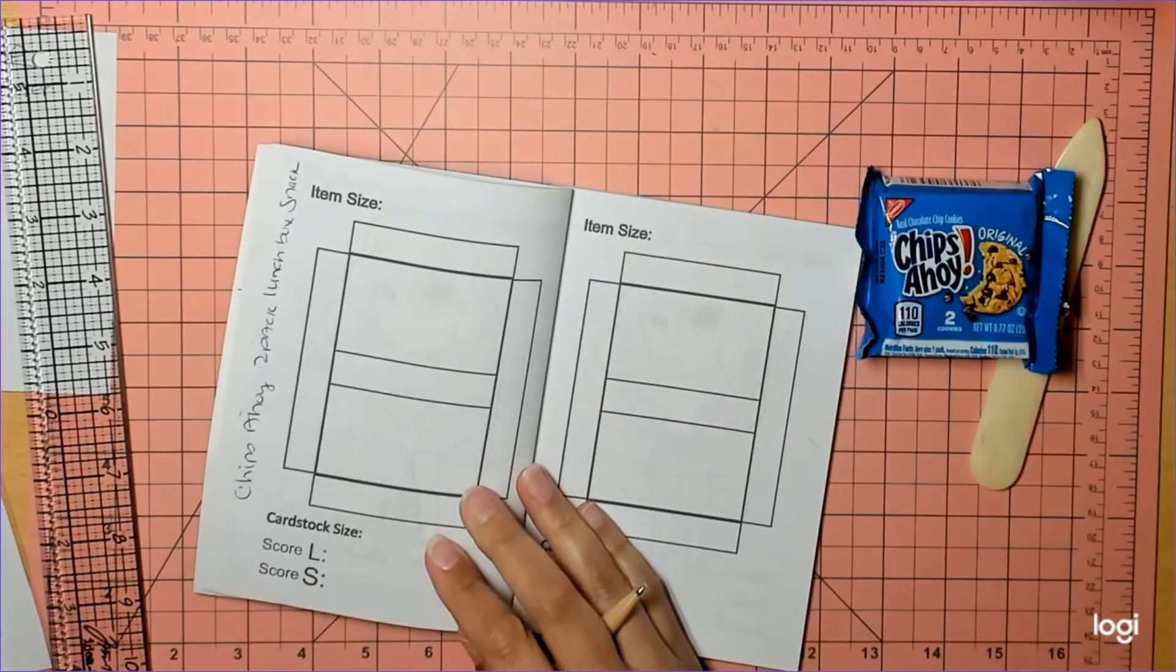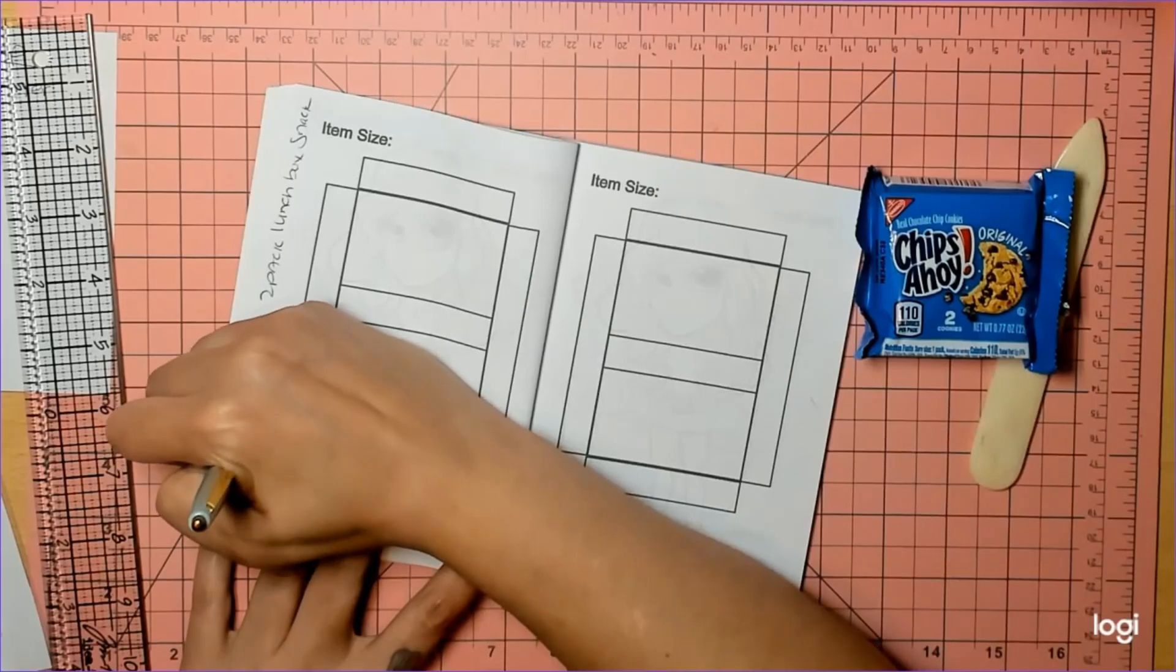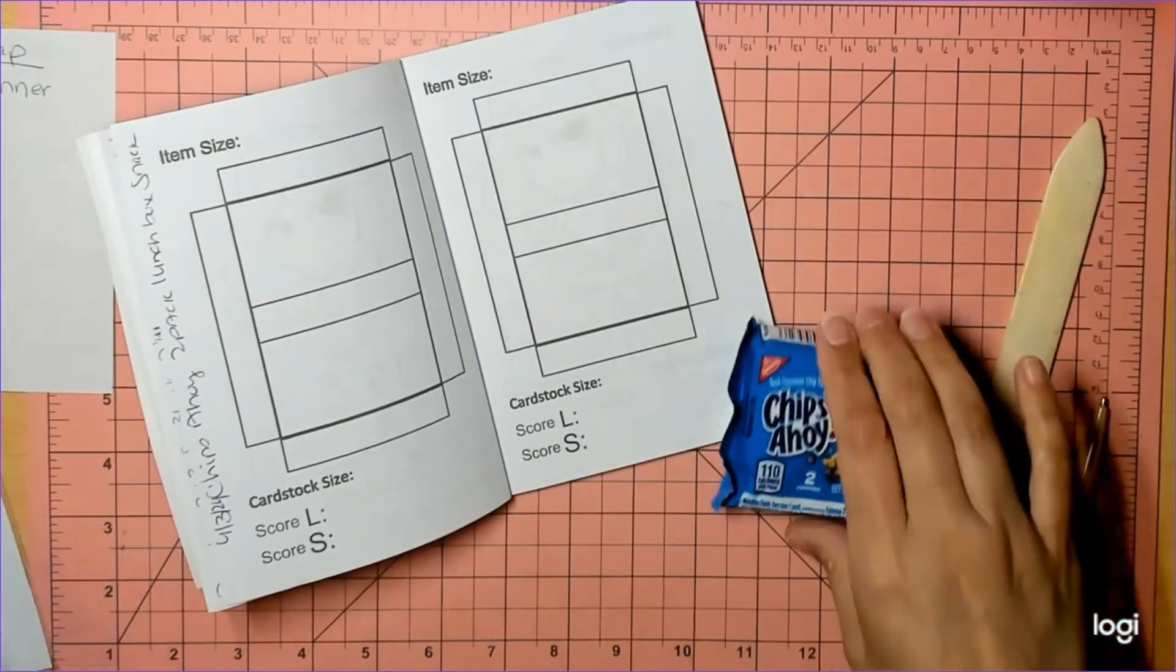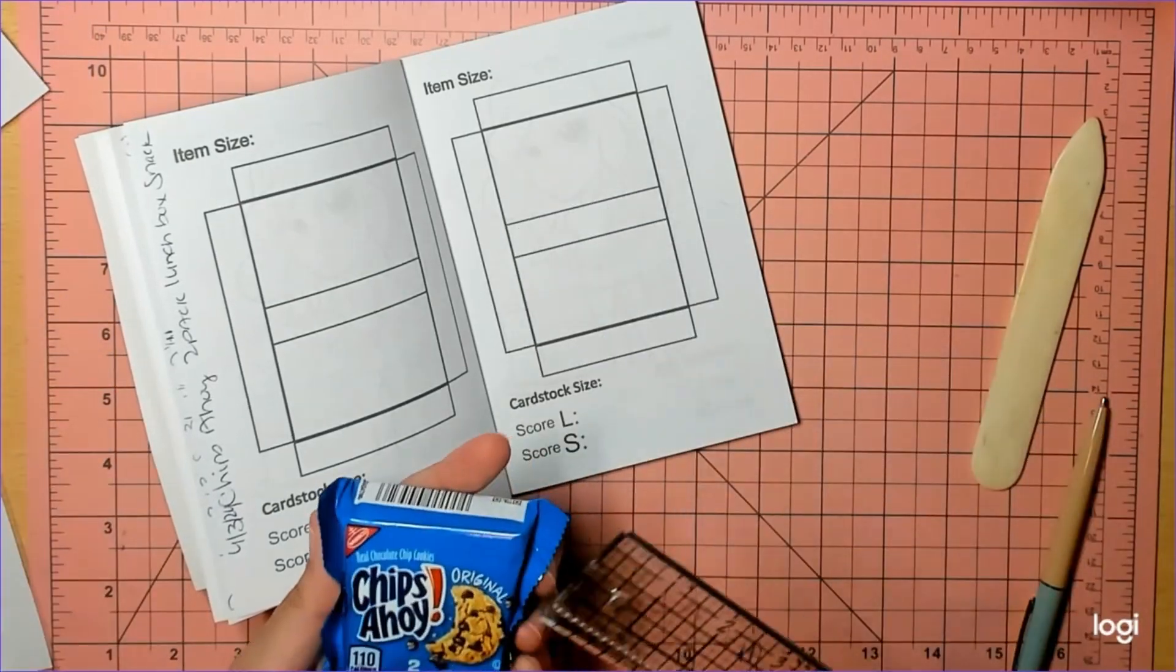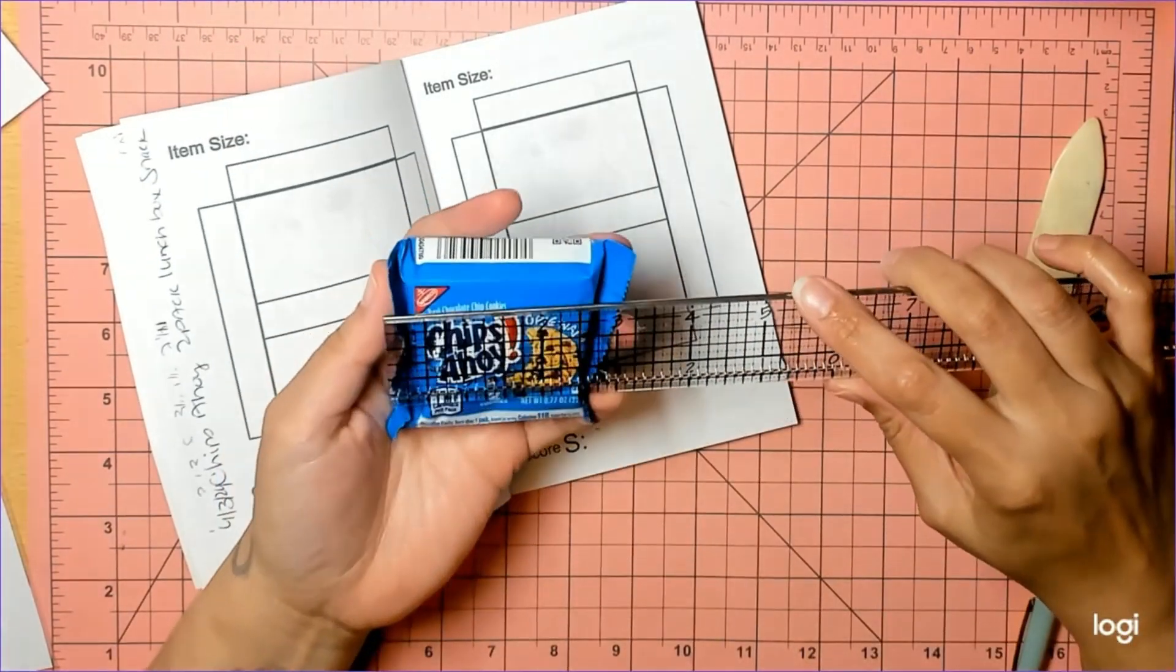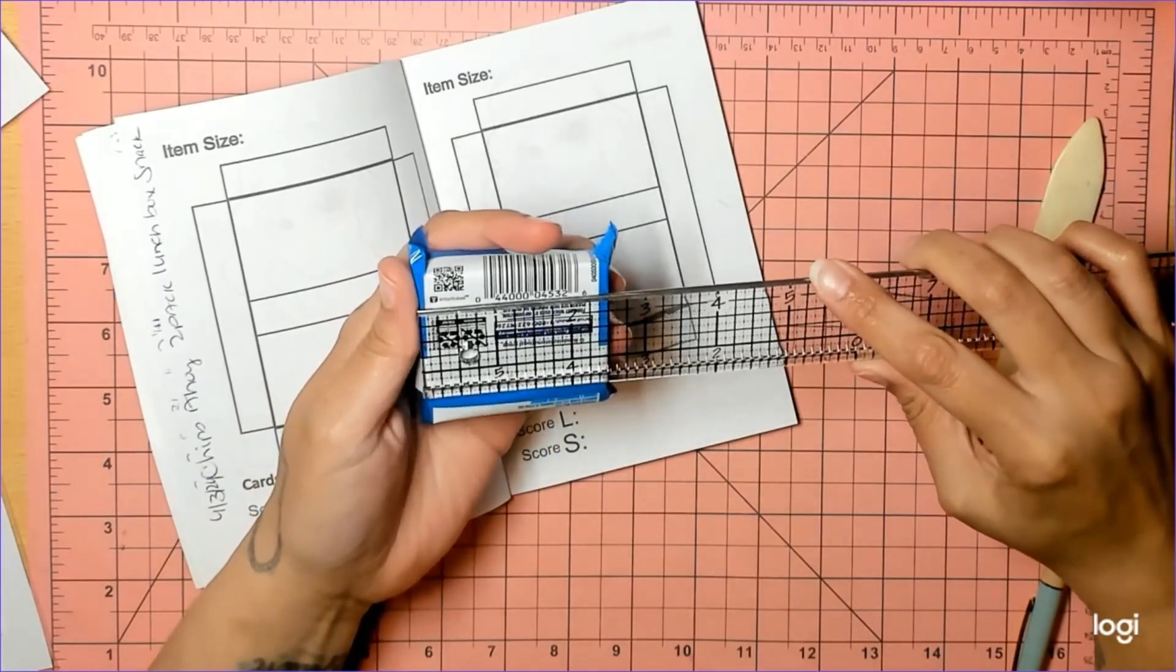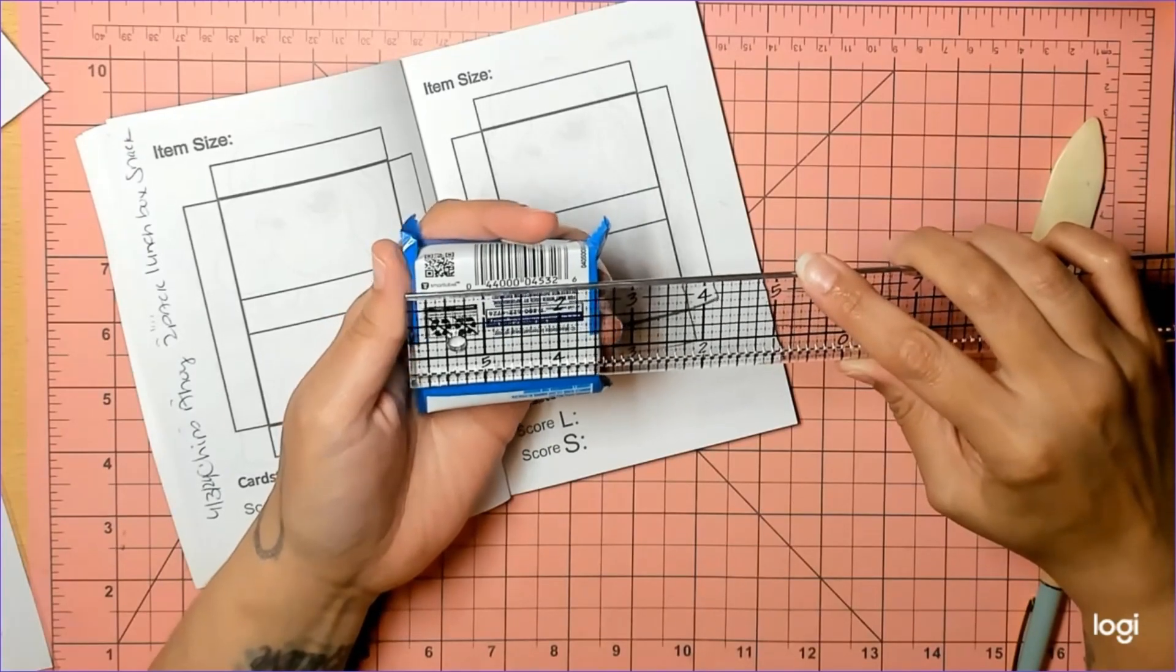Okay, so this is the Chips Ahoy two-pack lunchbox snack. You need to measure with either your flaps all the way out or your flaps in, depending on how you want it presented in your box. I'm gonna do two and three-quarters by two and three-quarters.